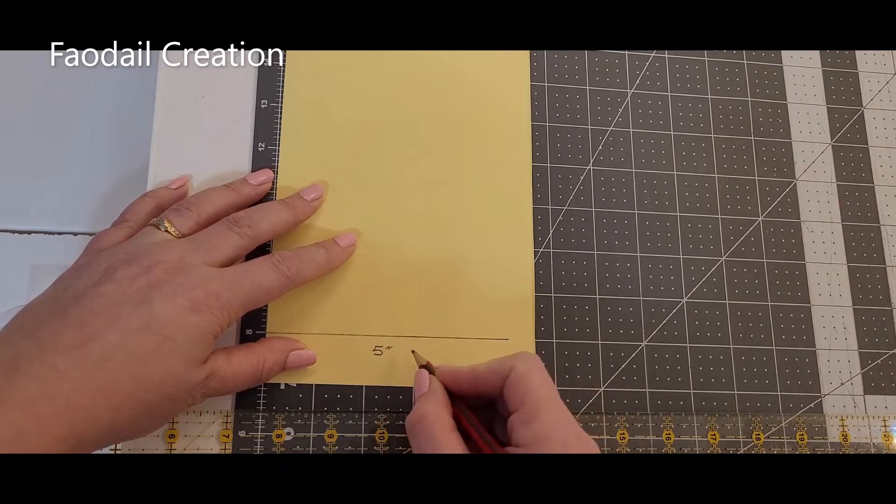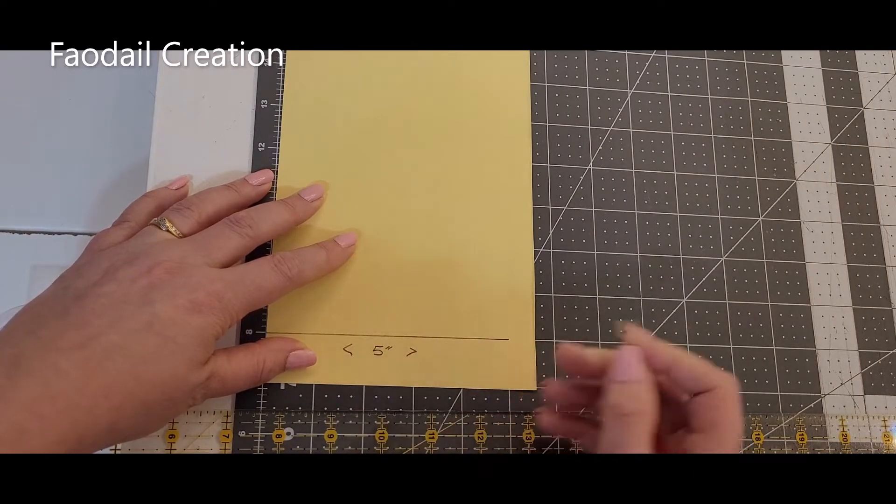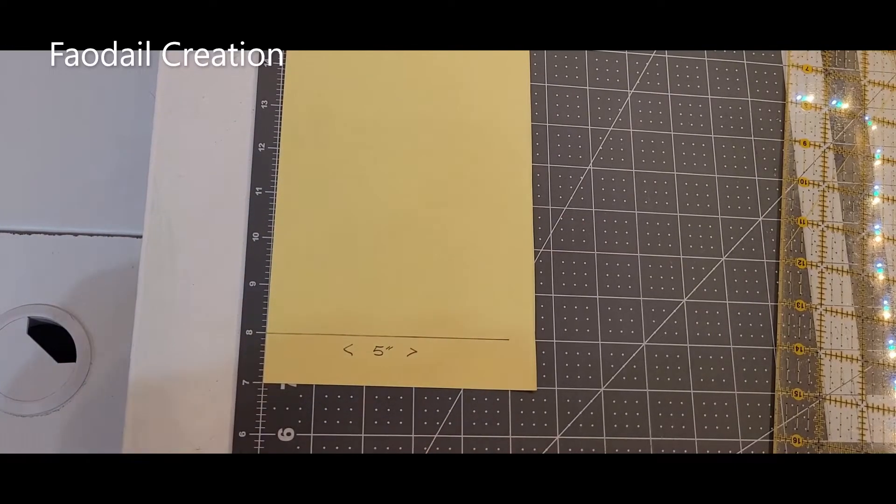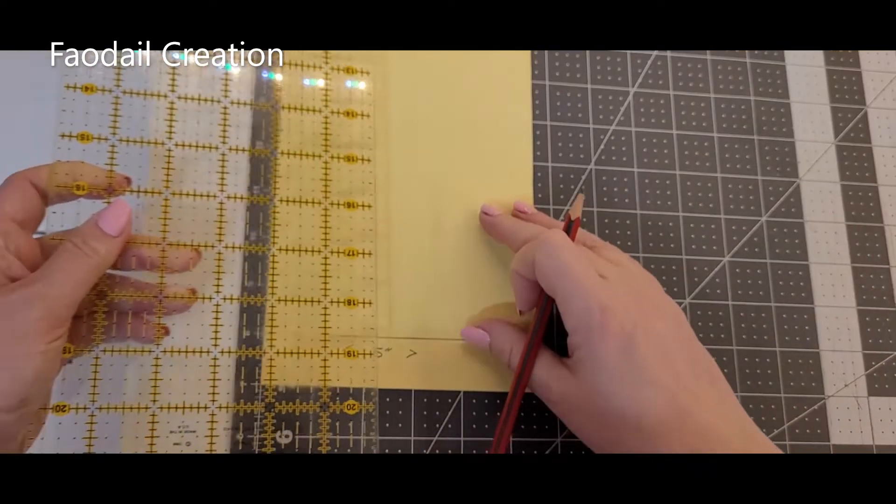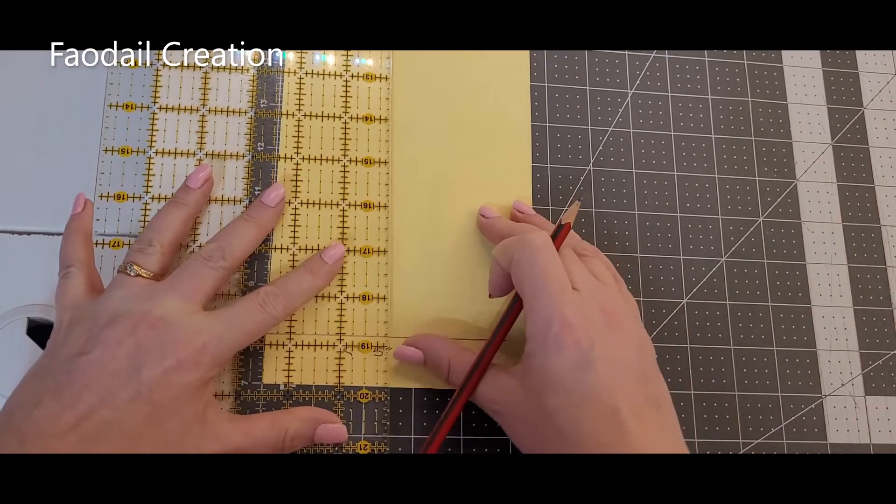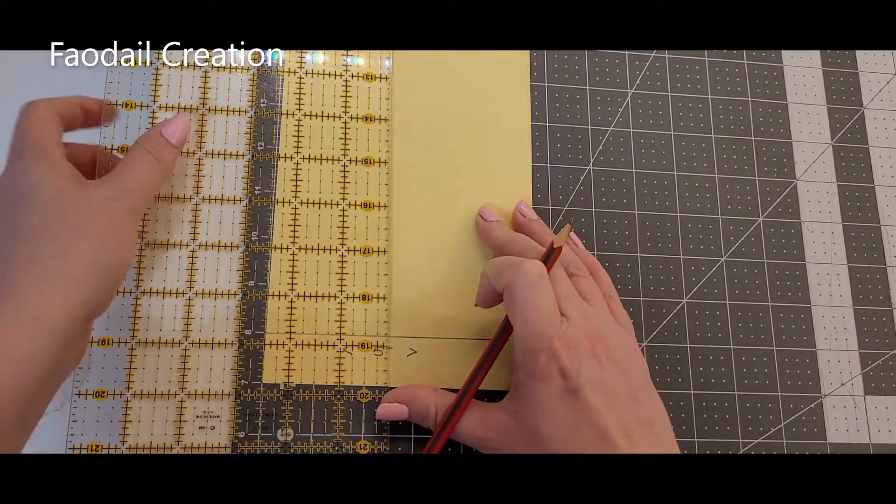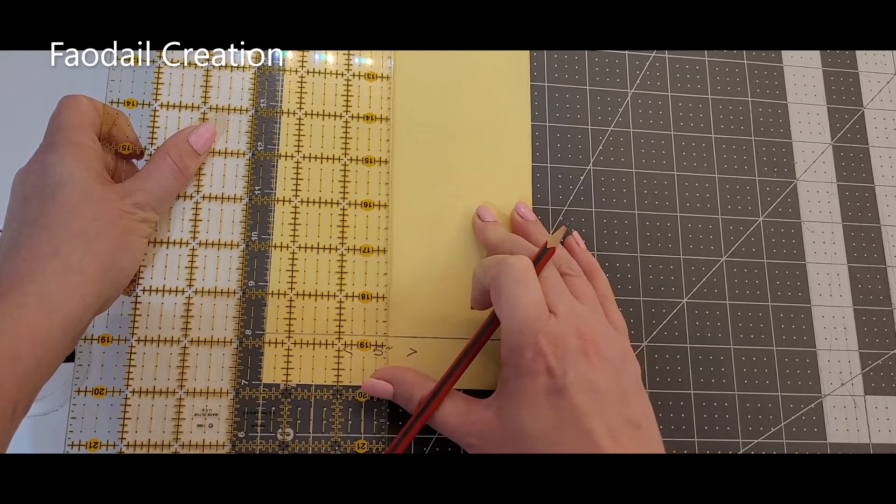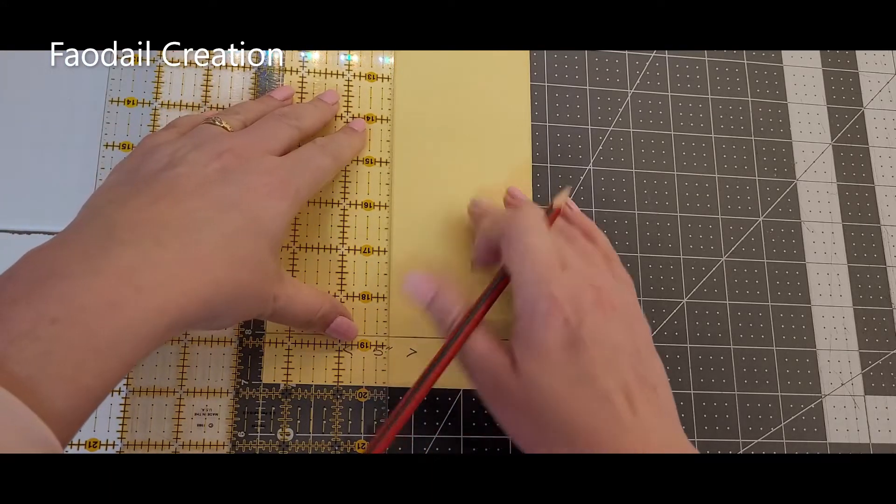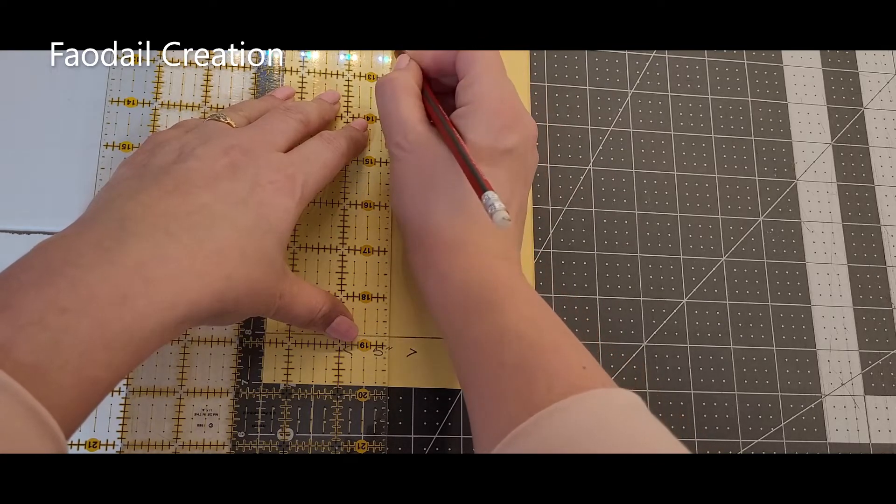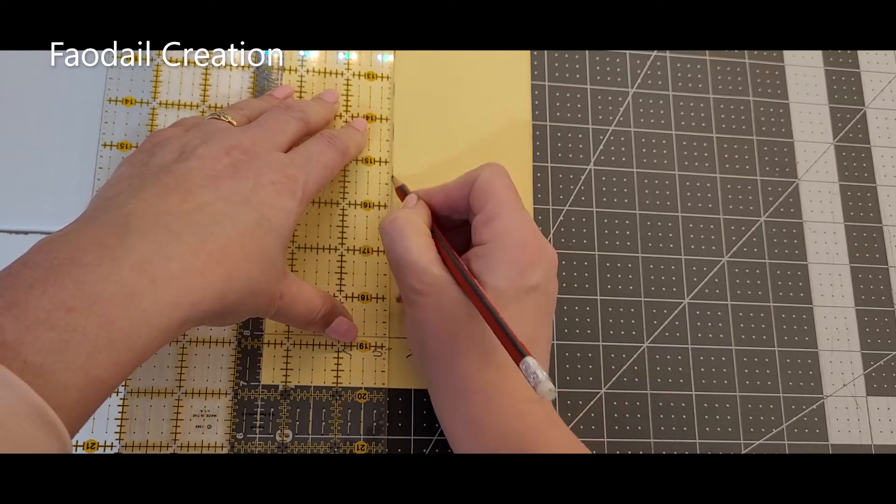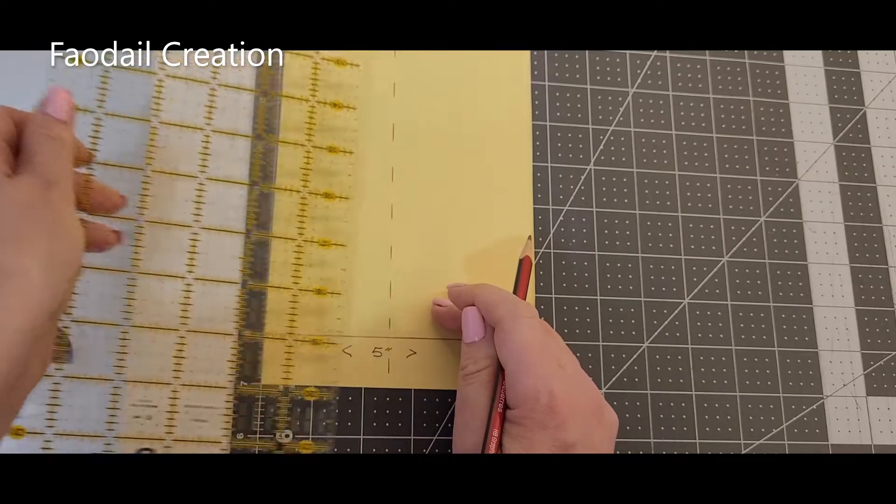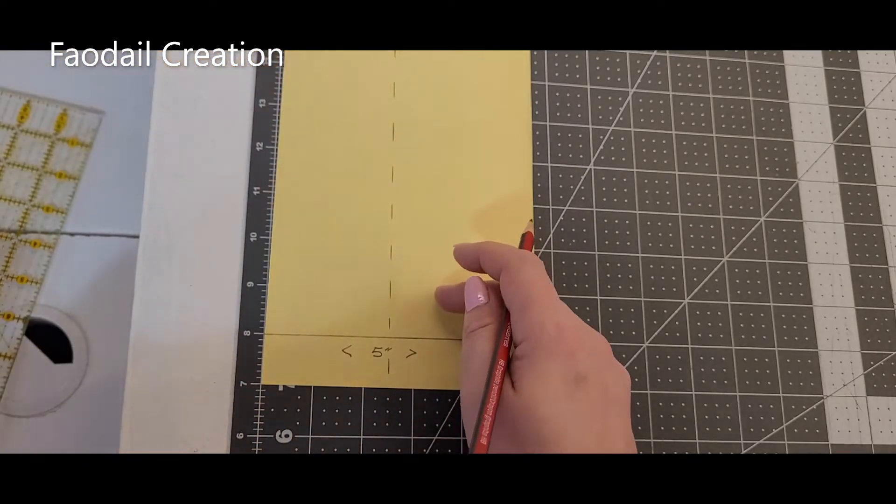Five inches this way to this way. So half of five inches is obviously two and a half inches. So I am going to find my two and a half inches and I'm going to line it up here. And I'm basically going to do a dotted line from the top all the way down. So this is two and a half inches.